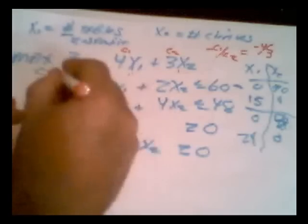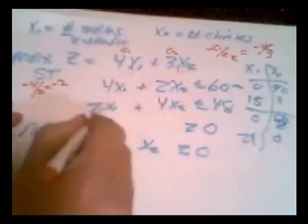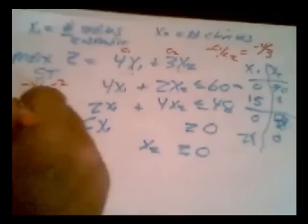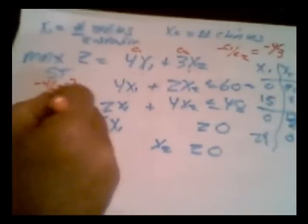Likewise, you can do that same trick on the constraints. The slope of this first constraint is minus 4 over 2, or minus 2. The slope of the second constraint is minus 2 over 4, or minus 1 half.